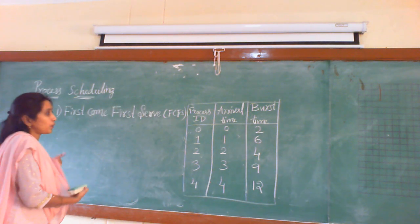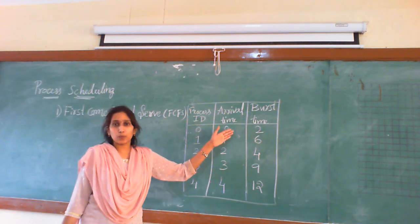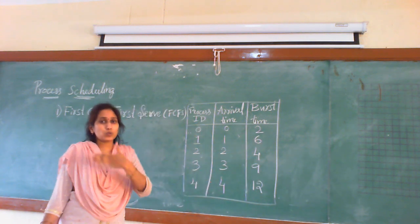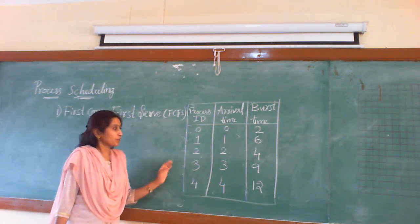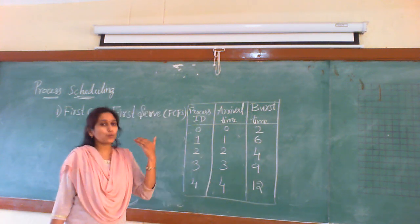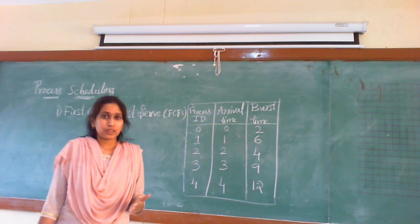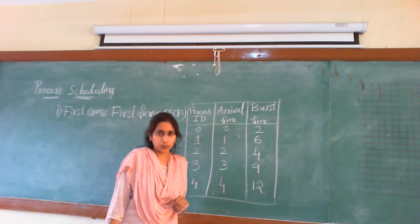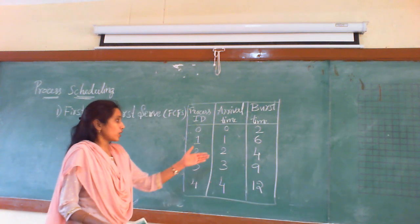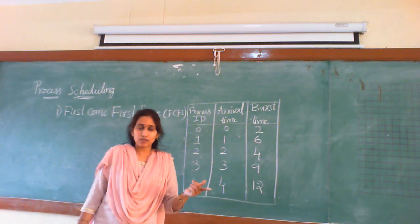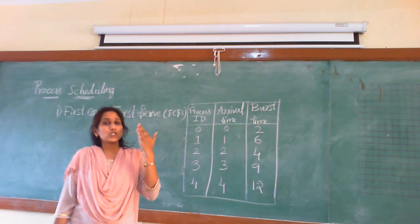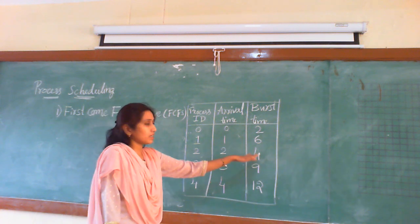The table has three columns: Process ID, Arrival Time, and Burst Time. Process ID is a unique number given to each process. Arrival time is at what time the process arrived into the ready queue — not clock time like 9:30, but simply which process arrived first, second, third. Burst time is how much time the process needs to be executed.